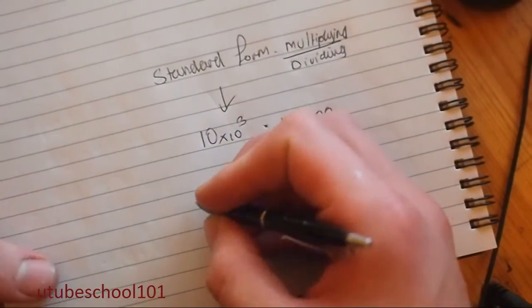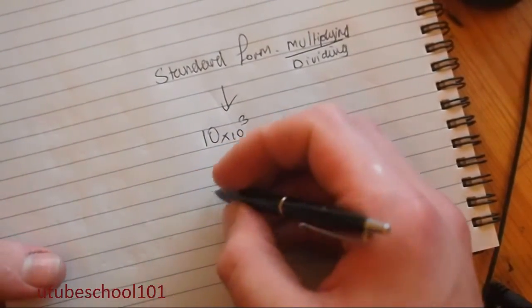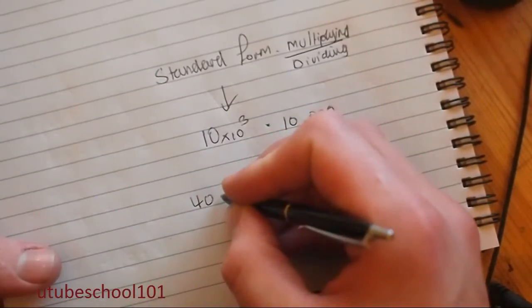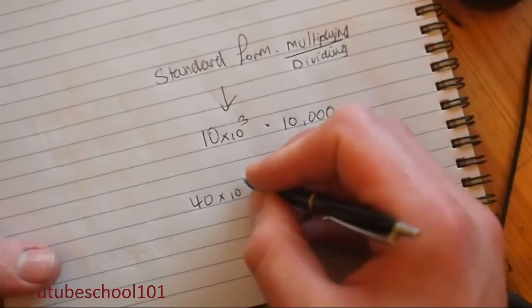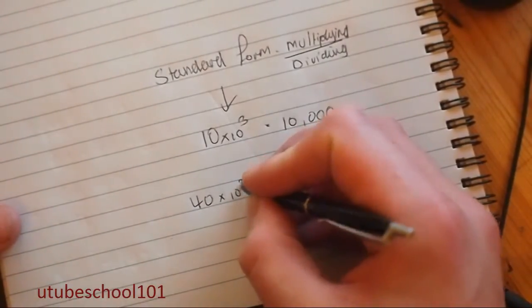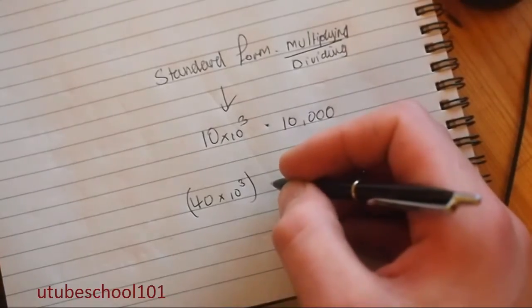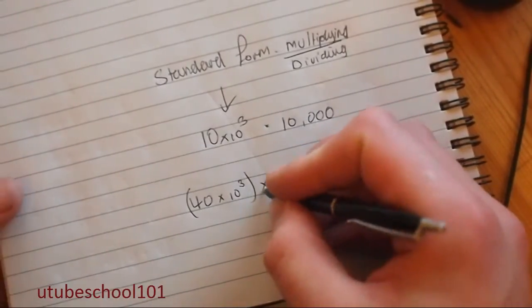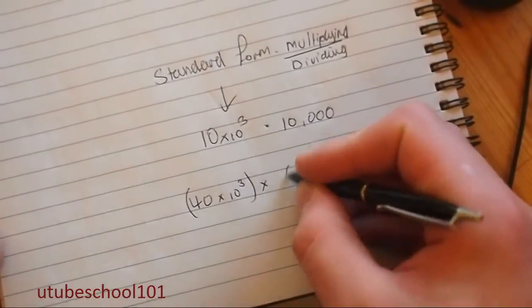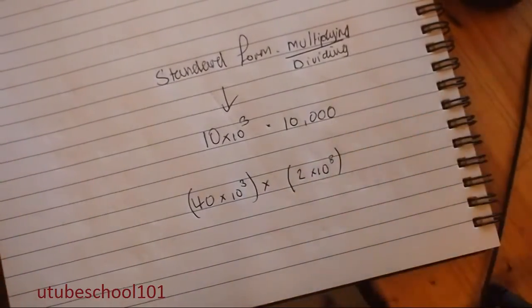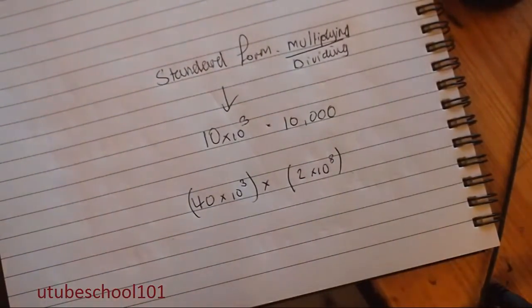And I'm going to focus on multiplying first. And you often get questions which will be similar to this. So you can say 40 times 10 to the power of 3 multiplied by 2 times 10 to the power of 8. Imagine this will be on a non-calculator paper because there is a very easy method of solving this.